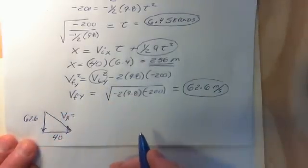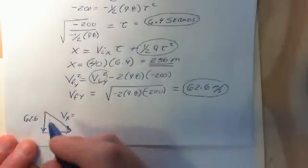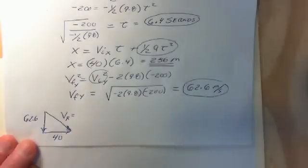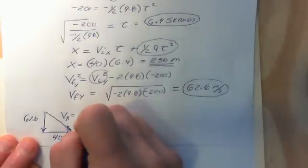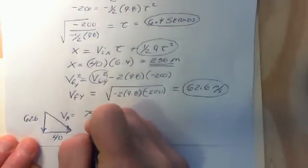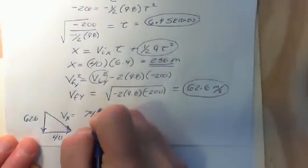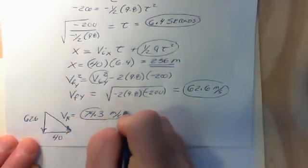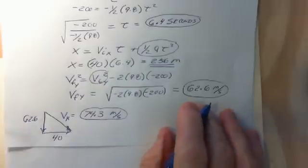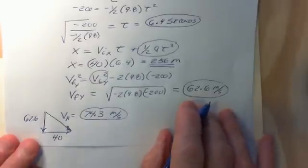So we go to Pythagorean Theorem. We take 62.6 plus 40. Sorry. We take 62.6 squared plus 40 squared. We take the square root of that. And you're going to get a value around 74.3 meters a second. Again, my rounding, I ran this with the calculators. My values may be slightly different, but that's going to give you your resulting velocity at impact.